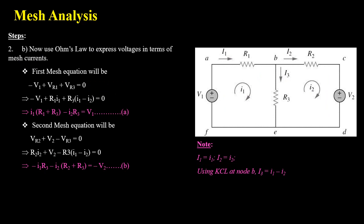As the second part of step two, we transform the voltages into mesh current form. For the first mesh equation — minus V1 plus VR1 plus VR3 equals 0 — V1 is the voltage source, VR1 is the voltage drop across R1, so VR1 equals R1 times i1. VR3 equals R3 times capital I3, and from KCL we know capital I3 equals i1 minus i2. On simplification we obtain the first equation of mesh analysis.